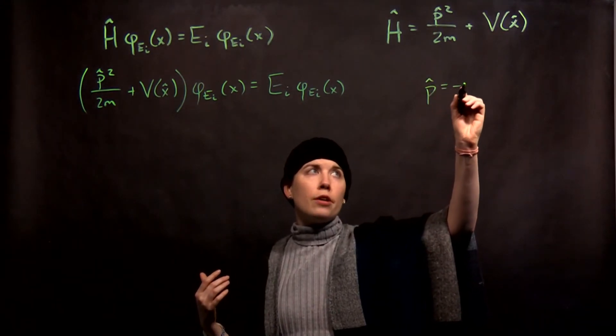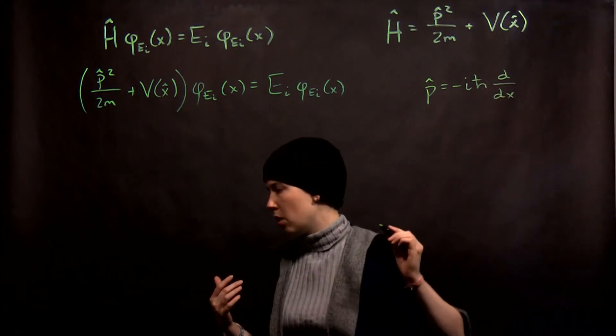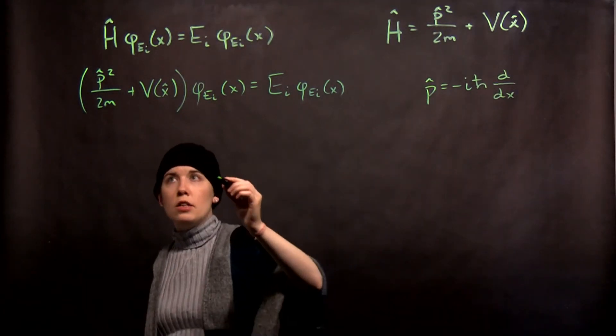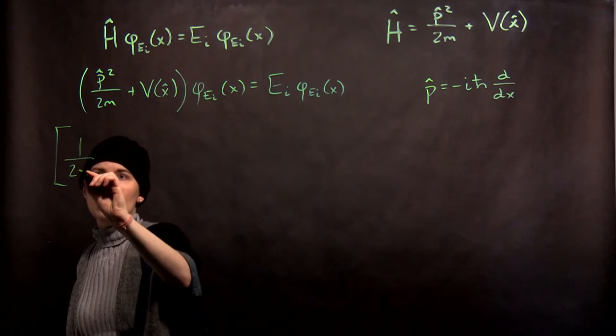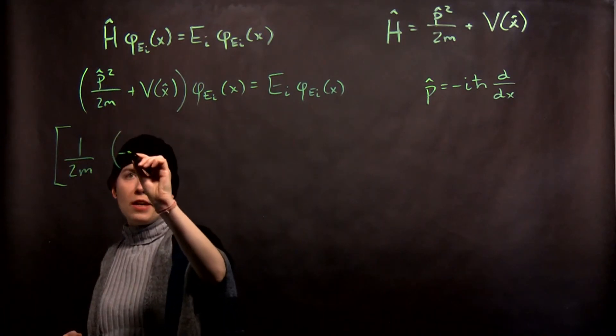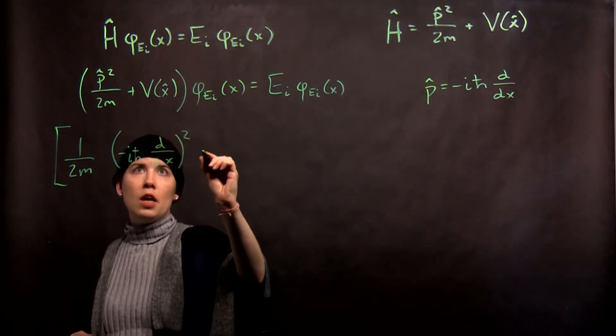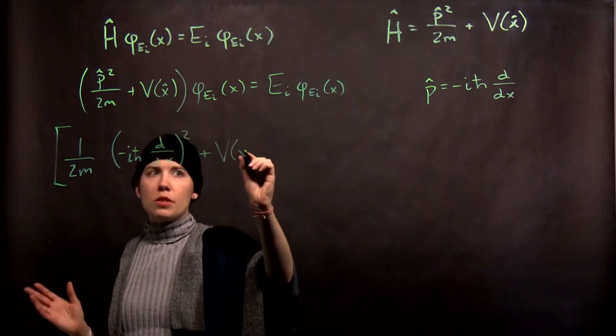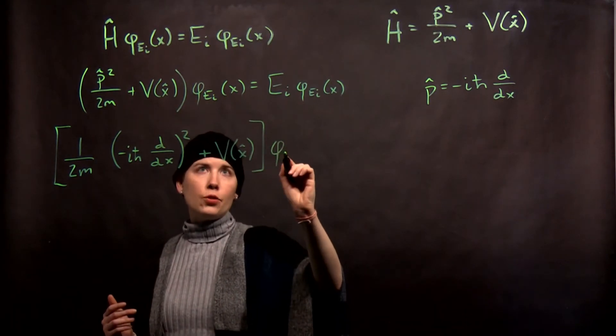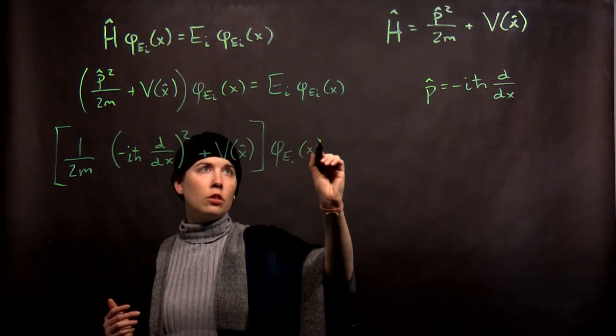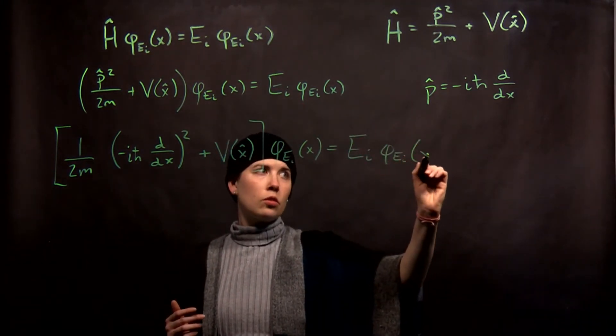Well we know that our momentum operator is negative i h bar d dx. So what do we do then? We plug that in. Now what does it mean for that to be squared? I'm going to pull out my 1 over 2m and now I'm going to take my operator and literally square it. And then I still have that potential energy term and that then is applied to whatever these special wave functions are which are my energy eigenstates.